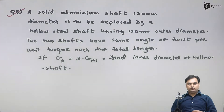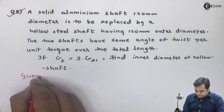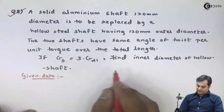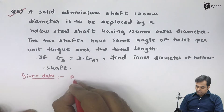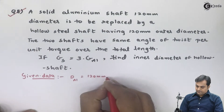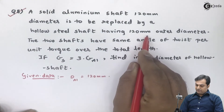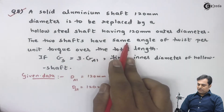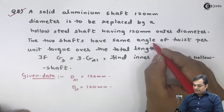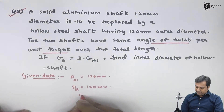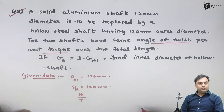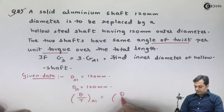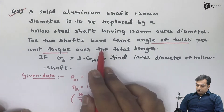Now I'll write the data for this question. The solid aluminium shaft diameter is 120 mm. The hollow steel shaft has an outer diameter of 120 mm. The two shafts have the same angle of twist per unit torque, meaning the theta-by-T ratio is the same for aluminium and for steel, as given in the question.